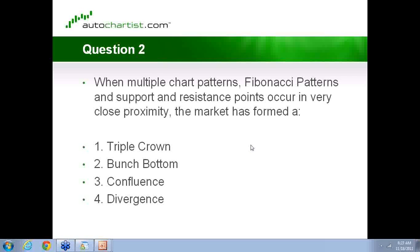Triple crown has nothing to do with the markets. I've heard 'bunch bottom' used in Fibonacci — three-way bunch bottoms and things like that. Divergence is something else — divergence is usually when you have a market going up and an oscillator going down or vice versa. You see that a lot when you use price patterns and stochastics: the stochastic indicator still hooking up when price maybe takes a stab to the downside. People do look at divergences, but confluence is what we're looking for.